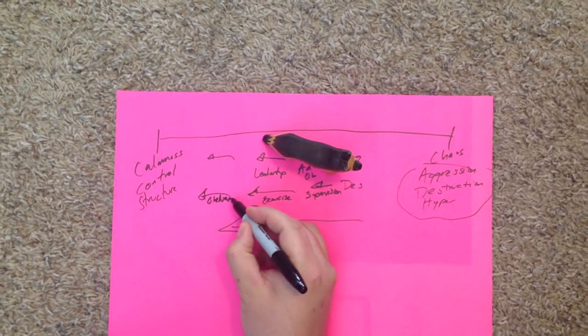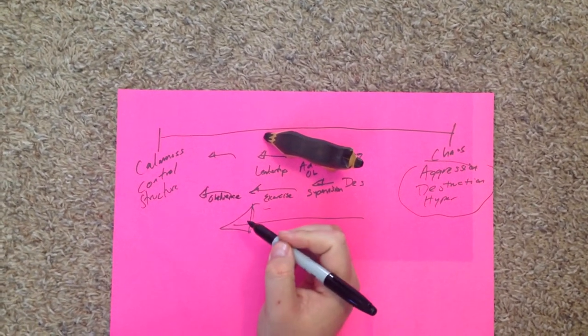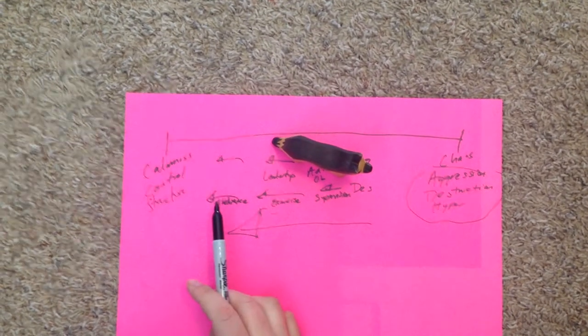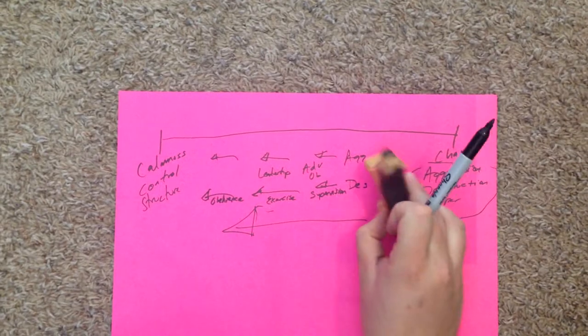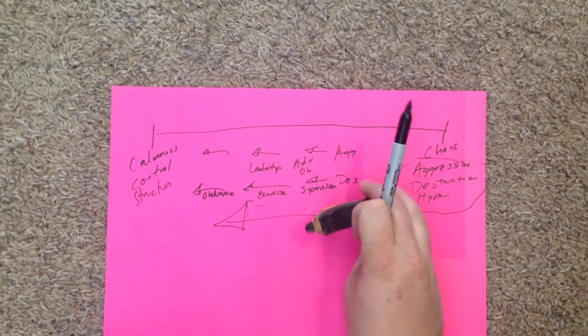I always tell people, you're going to tire a dog out faster through his brain than you are his body, and you can often do that with obedience. Every one of the issues that you're having is because your dog is living on the wrong end of the spectrum.